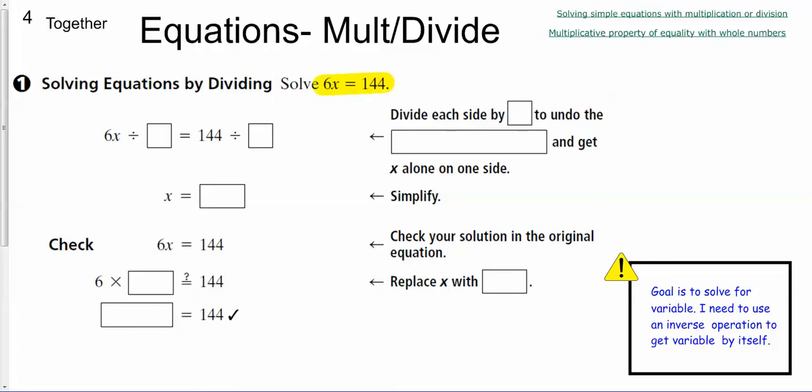So if we do a quick refresher, what does it mean when a number and a variable are right next to each other? If you said multiply, that's correct. So if a number and a variable are right next to each other, that means I multiply. So how do I undo the multiplication? I divide.